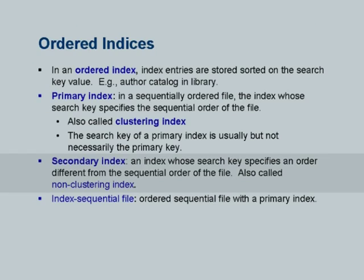How do you choose how to cluster a relation? That depends on the queries on that relation. For example, the takes relation would ideally be clustered on ID. A secondary index is one where the search key is not clustered. If you do not cluster the takes relation on ID, the records for a student will be scattered, and the index on ID will be a secondary index.